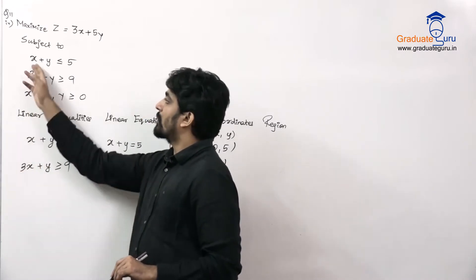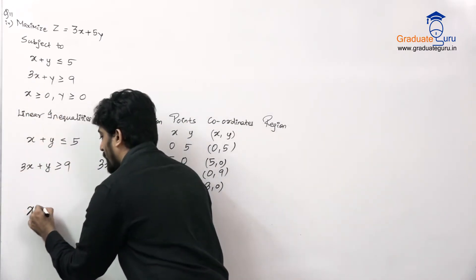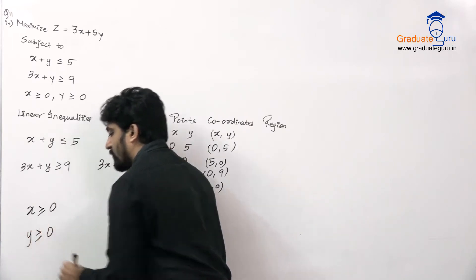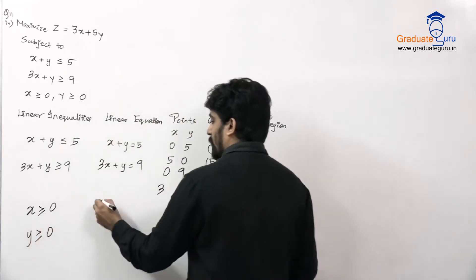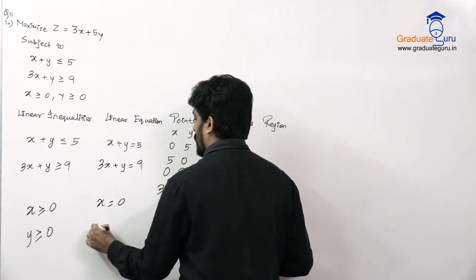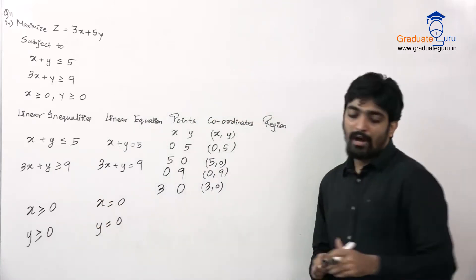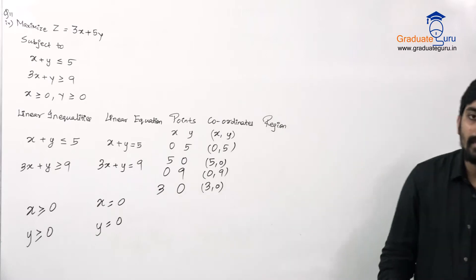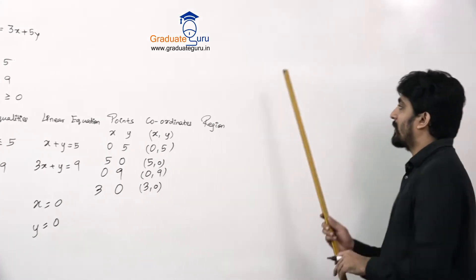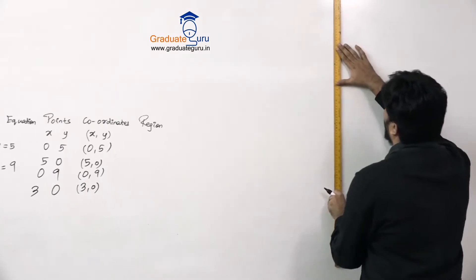That condition is done. After that, we have x greater than or equal to 0 and y greater than or equal to 0. Now we need to draw the graph for these values. Since we want to reach y value up to 9, we'll start a little lower on the axis.